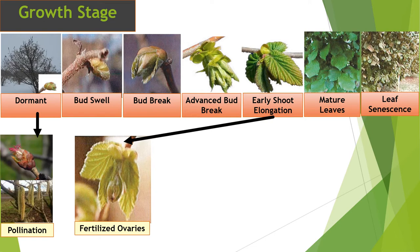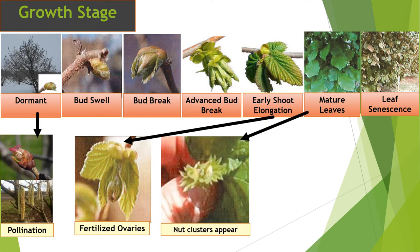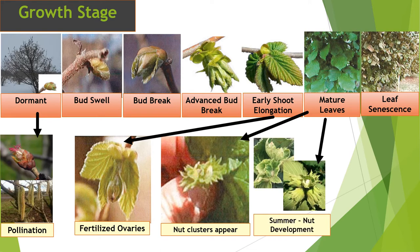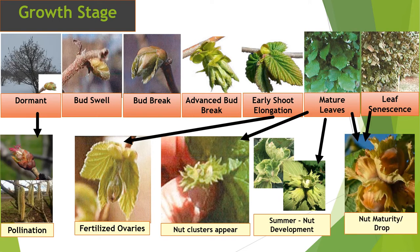Once we have fertilization, you'll start to see fertilized ovaries — we started to see that in hazelnut orchards in mid-May of 2021. Eventually, as those start to develop, we get nut clusters appearing with soft, tender nuts. You want to be watching them because that's when they are most susceptible to damage by certain insect pests. Then over time, as they develop through the summer, they start to harden and turn brown, reaching maturity in late summer or early fall depending on the variety, and that is when you would be harvesting your nuts.